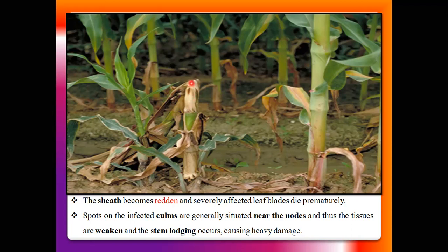A large number of lodged plants result in heavy damage or heavy yield losses. Brown spot symptoms are seen on the leaf portion, mid-rib portion, culm portion, stem portion, and sometimes this infection is also seen on the husk portion of the maize plants.